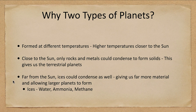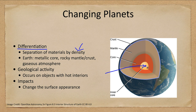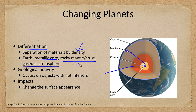How do these planets change over time? One way is through differentiation — a separation of material by density. The densest objects fall down to the core, and density decreases as you move up toward the surface. In Earth, we have a metallic core, a rocky mantle and crust, and a gaseous atmosphere. So the very low density atmosphere surrounds us, the middle-density rocky material makes up much of the Earth, and the large core is the densest metallic material.